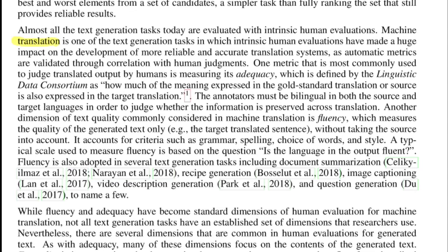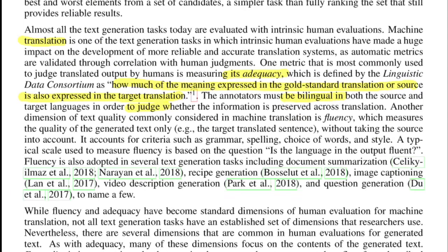In translation systems, one common human evaluation metric is adequacy, which measures how much meaning from the source translation is also expressed in the translated version. Evaluators must be bilingual to judge this well. The second metric is fluency, where the translated sentence is measured independently of its source sentence — looking at grammar, spelling, style, and word choice. A very common question asked to evaluators is: 'Is the language of the output fluent?' — often answered via a Likert scale from minimum to maximum.